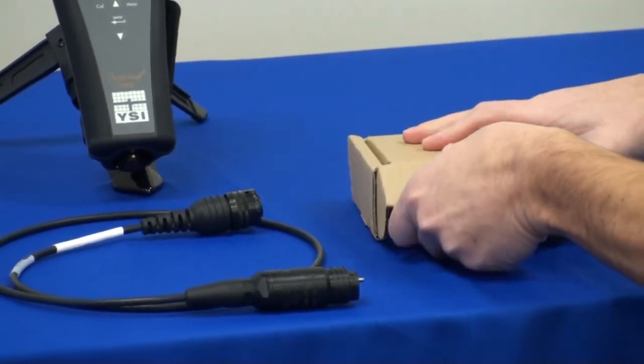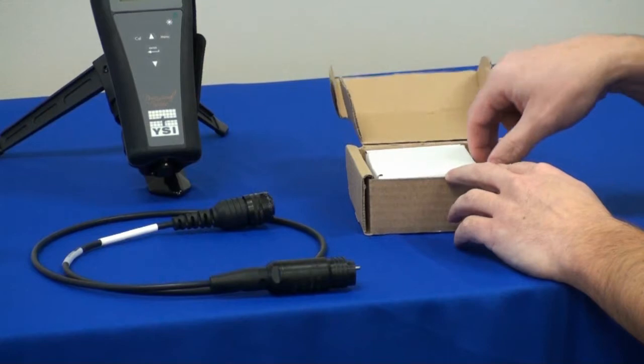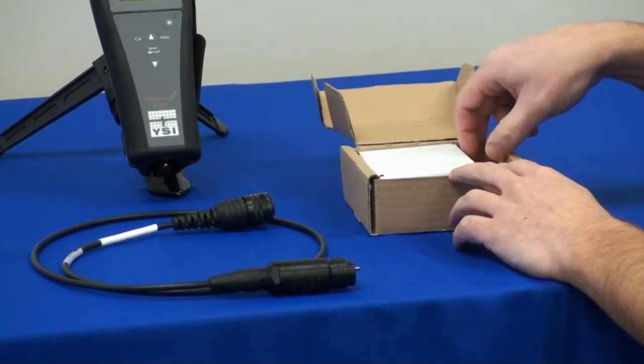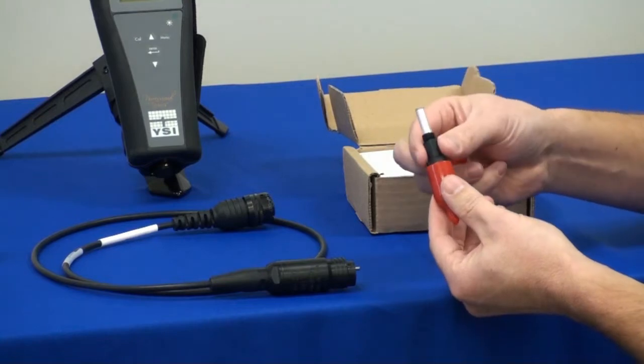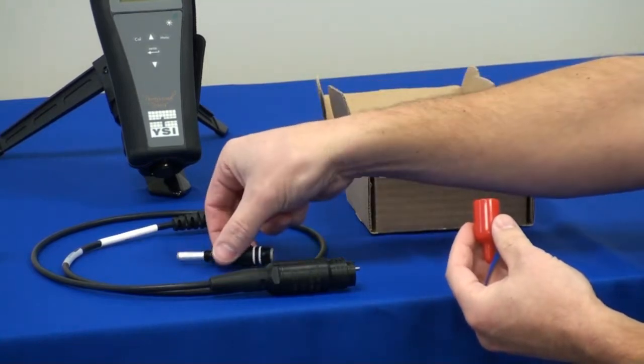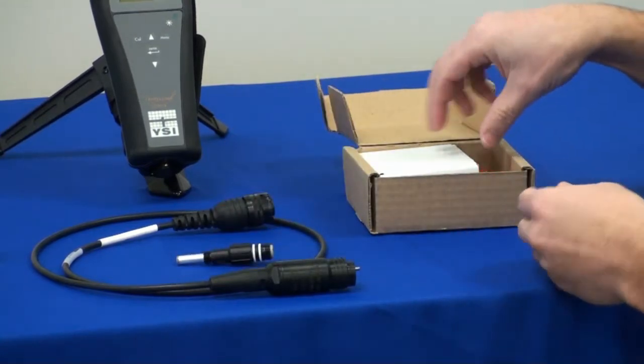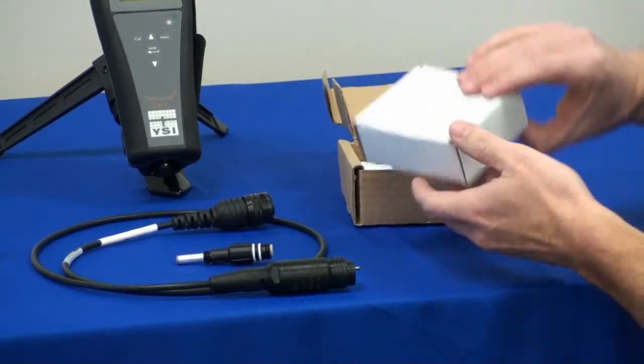I'm going to get out the membrane kit and the DO sensor. The DO sensor has got caps on it to protect the sensor and to protect the connection. Set that aside, go ahead and put those back in. Get out the membrane kit.